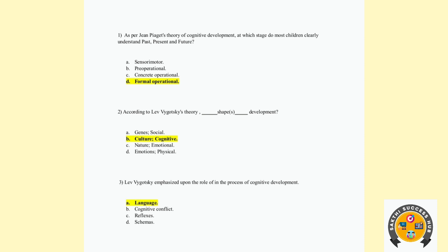Second question: According to Vygotsky's theory, what shapes cognitive development? If you look at Vygotsky's name, there is a socio-cultural theory. That is culture shapes cognitive development. So the answer is B — culture shapes cognitive development.